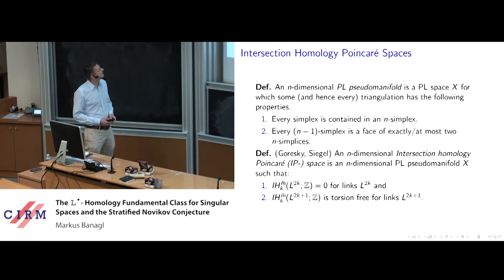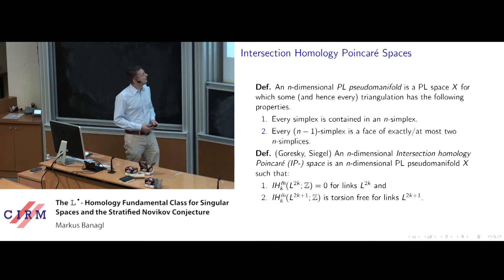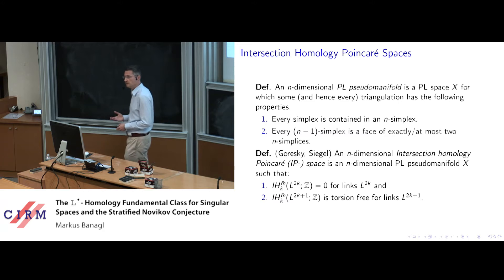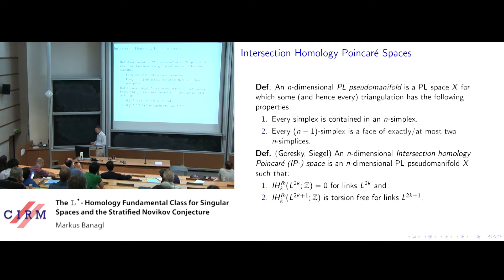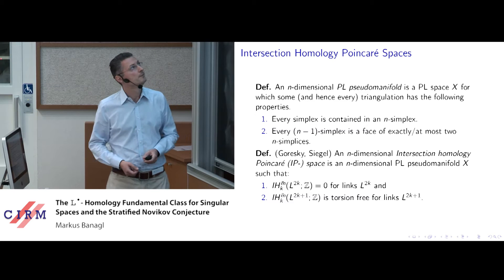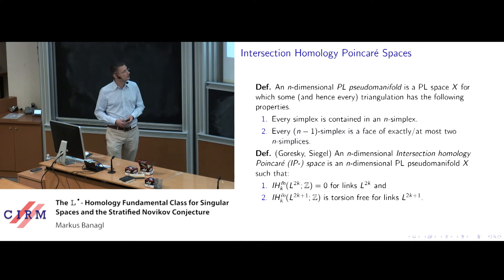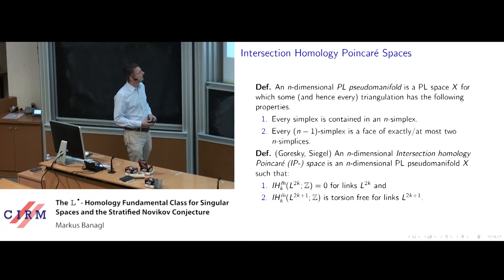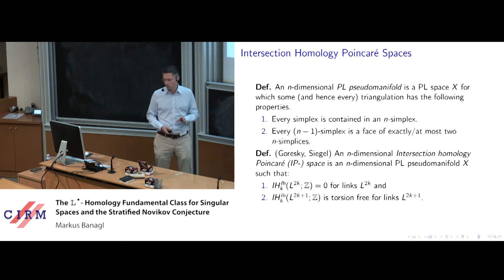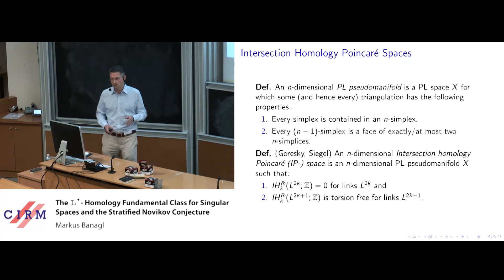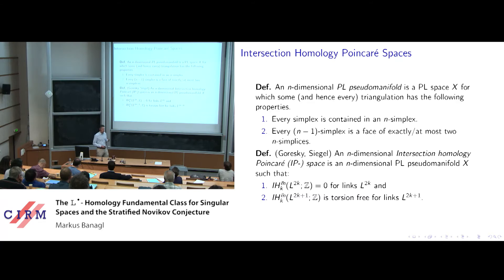What about singular spaces? The class of spaces we will work with here are pseudo-manifolds in the piecewise linear sense: every simplex is a face of some n-simplex (a density condition for the top stratum), and every (n−1)-simplex is the face of either exactly two n-simplices, or one if there is a boundary. We also allow boundaries. We equip these pseudo-manifolds always with their intrinsic stratification, so I will never have to mention stratifications explicitly.